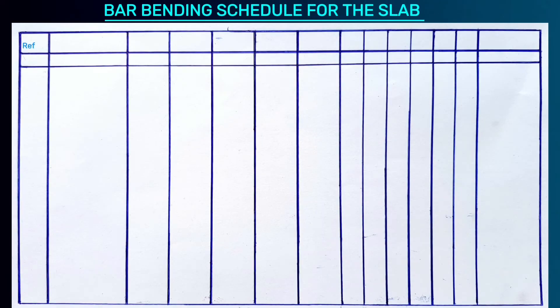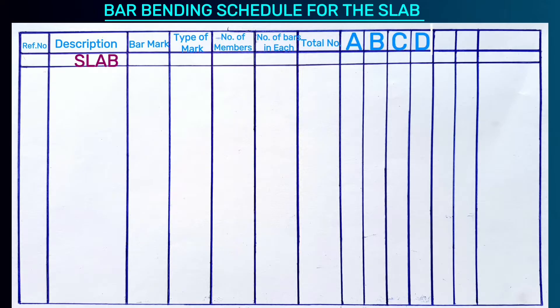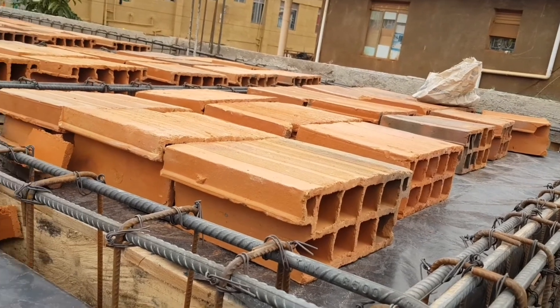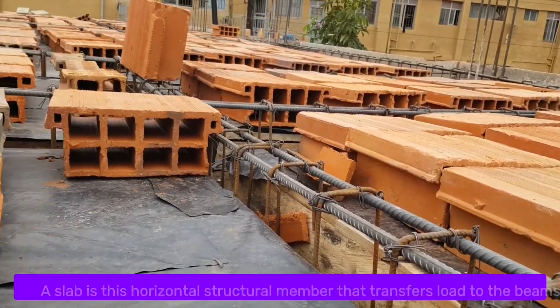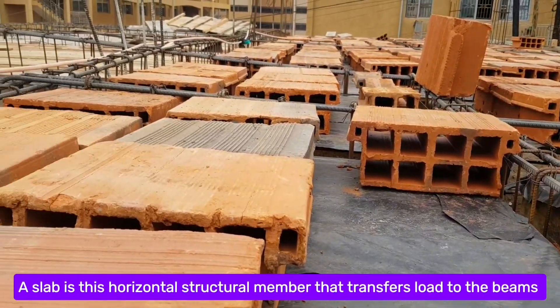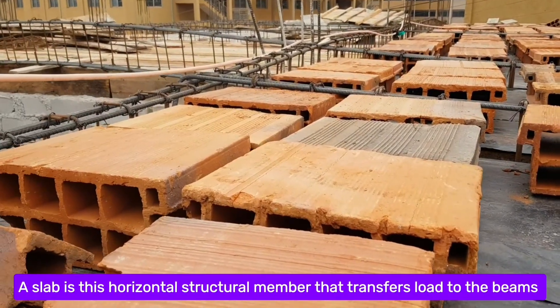In this video you are going to learn an easy step-by-step guide on how to make a bar bending schedule for the slab — the easiest possible way that literally anyone can understand, so be sure to watch this video till the end. Let's first clearly understand what a slab means. A slab is a horizontal structure member that transfers load to the beams. Now let's dive into these four easy steps to make a bar bending schedule for the slab.